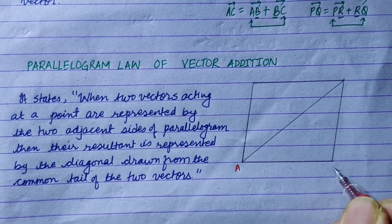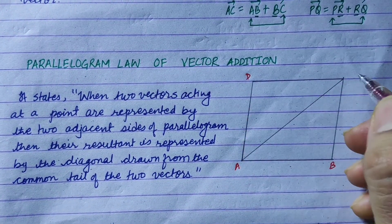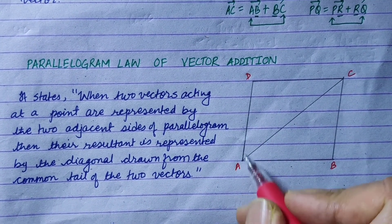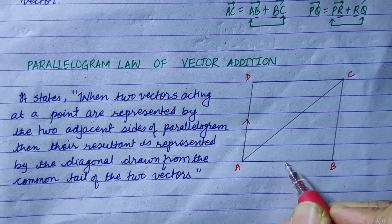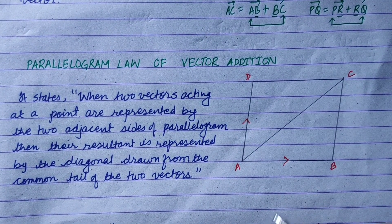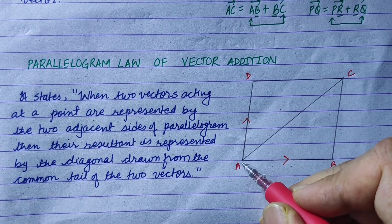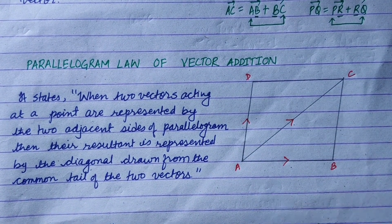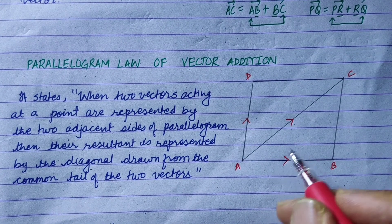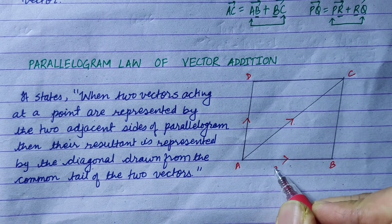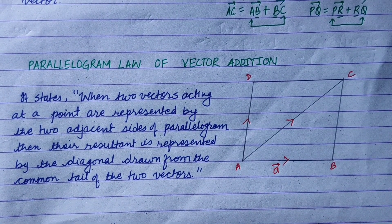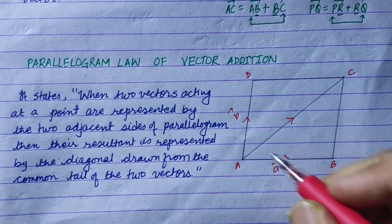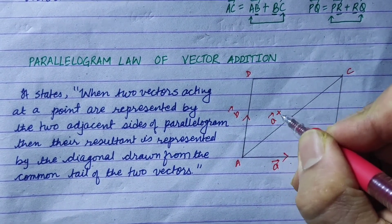Suppose the points are A, B, D, and C. The continuous strip is A, B, C. Now the AB line will be represented as small vector a, and the AD line will be small vector b. So what is the resultant vector? It is vector A plus vector B.